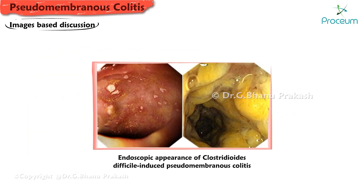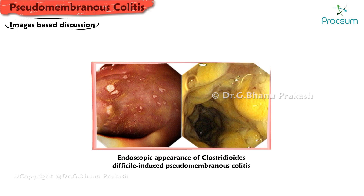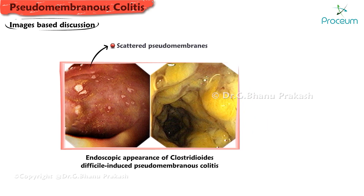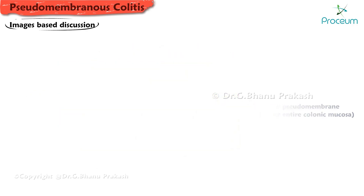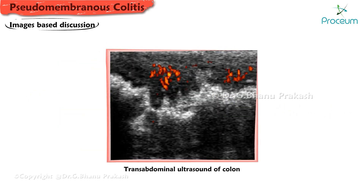Here is the endoscopic appearance of Clostridioides (formerly Clostridium) difficile-induced pseudomembranous colitis. The left panel shows scattered pseudomembranes visible on top of the mucosa, separated by areas of relatively normal mucosa, with some lesions having a red halo. The right panel shows yellow pseudomembrane circumferentially covering the entire colonic mucosa.